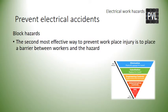The second most effective way to prevent workplace injury is to place a barrier between workers and the hazard. For example, a non-conductive fence separating workers from energized wiring can effectively block workers from electrical shock hazards in that area. As no block method is 100% effective, workers should be aware of the hazards and respect the established barriers.